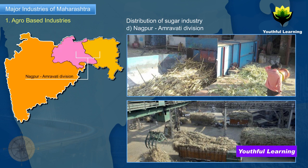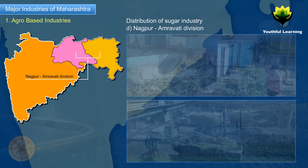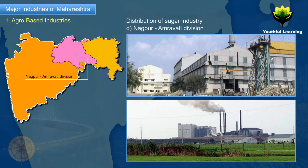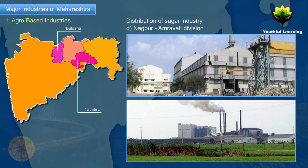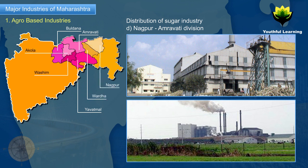Nagpur-Amravati Division: Sugar factories have been set up in Yavatmal, Buldana, Amravati, Akola, Wardha, Nagpur, Washim, and Bhandara districts.